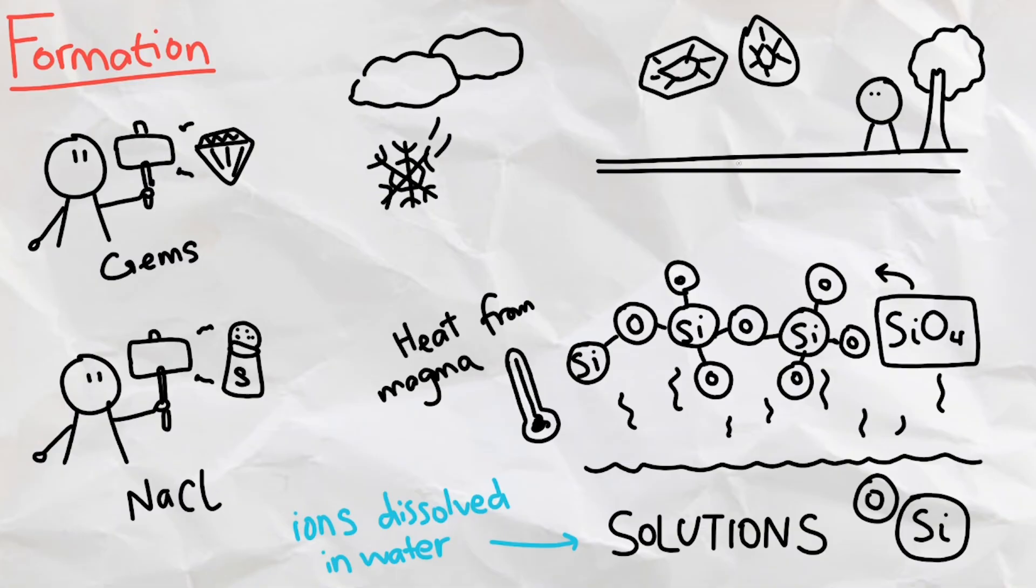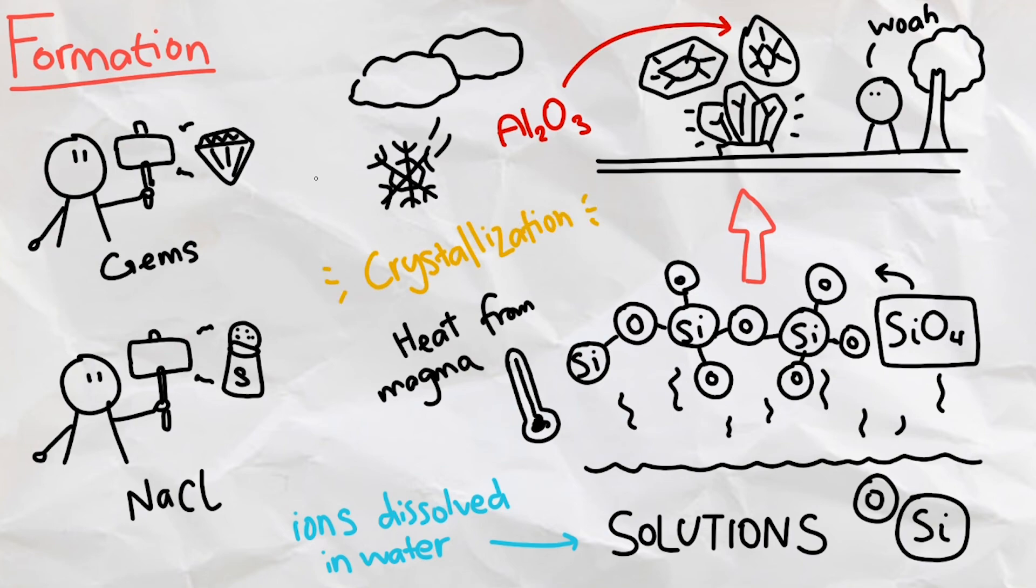As they cool, those ions will try to stick to each other, forming this tetrahedral and orderly shape. Another example is ruby crystals, which are formed in solutions of aluminum and oxygen, giving them a hexagonal and orderly shape. This process is called crystallization.